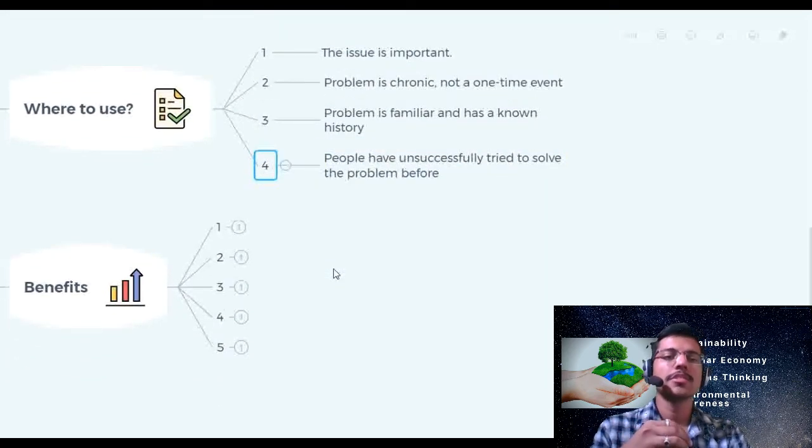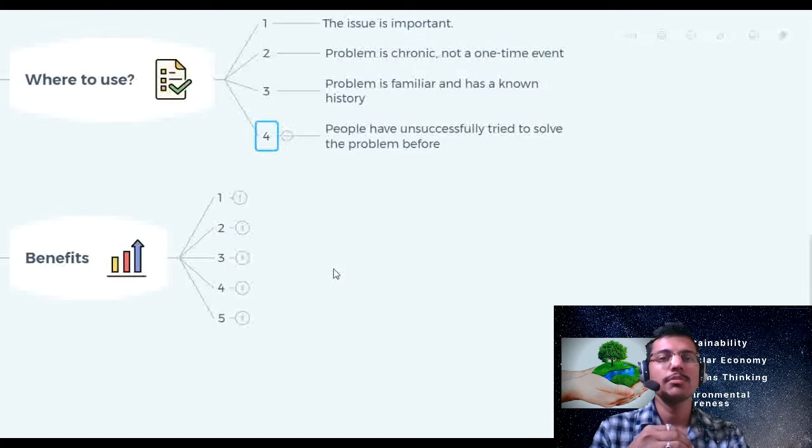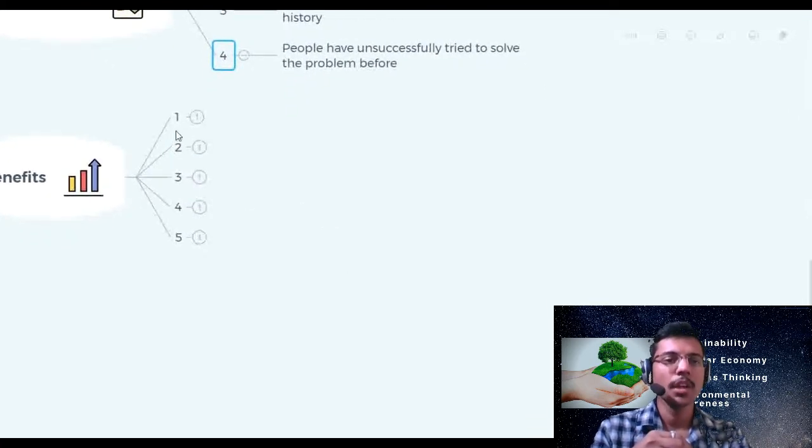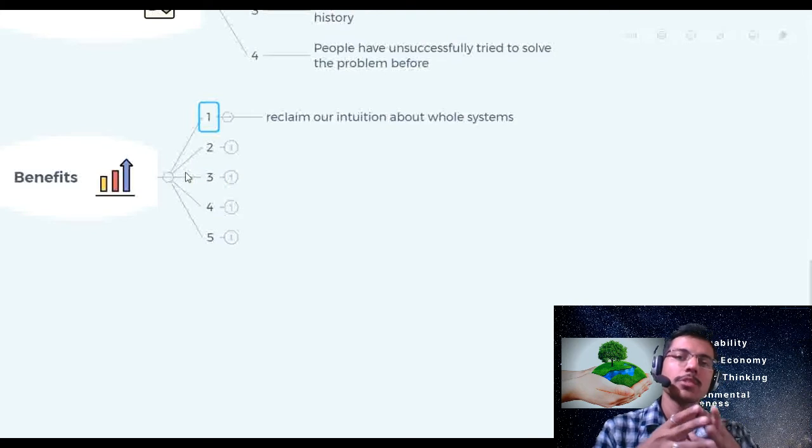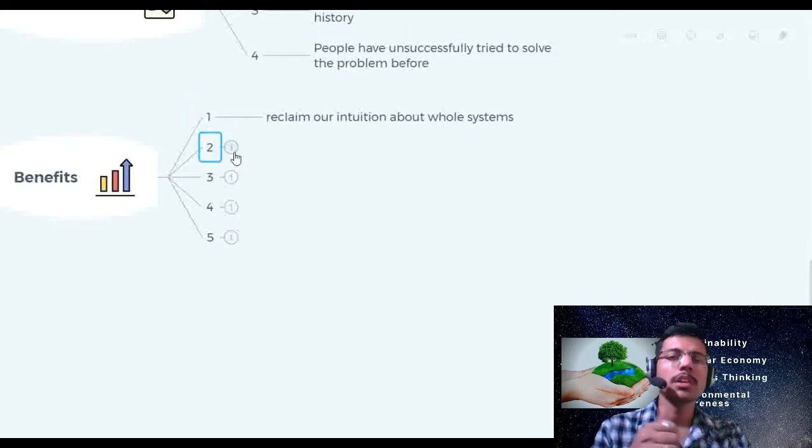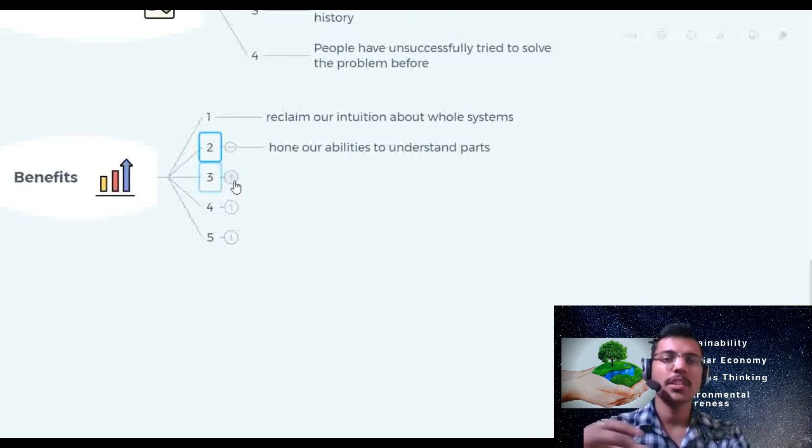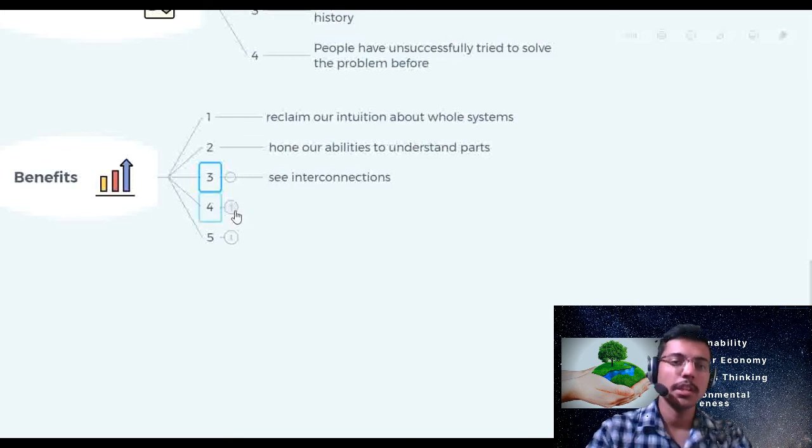Let's see if we use systems thinking, what are the benefits that we are getting from systems thinking? First is reclaim our intuition about whole systems. Systems thinking really helps us to understand how systems are working. Second is about hone our abilities to understand parts. We try to analyze what are the parts and how they are interacting.